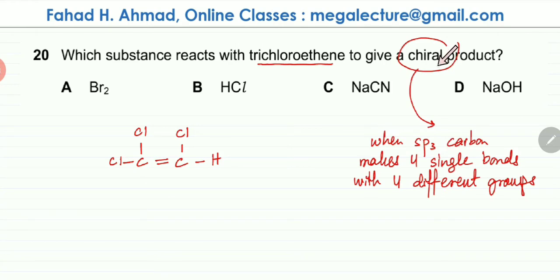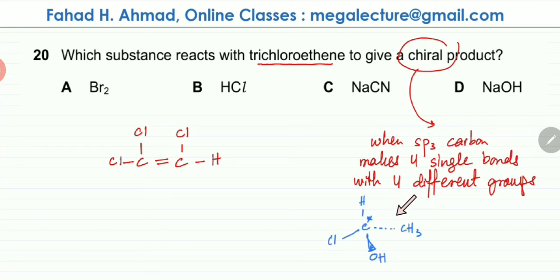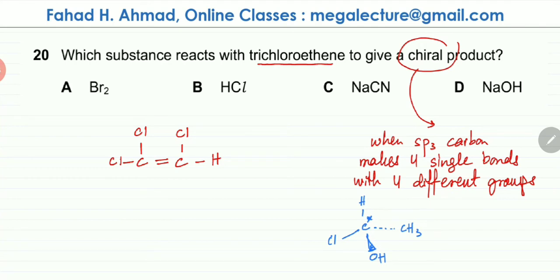A chiral product contains a carbon atom that is sp3 hybridized, making four single bonds with four different groups, and forms optical isomers. You can see a molecule that is chiral — a carbon atom making four single bonds with four different groups, capable of forming optical isomers. There will be another molecule that is an exact mirrored version. So we are looking for this type of carbon atom in the product.